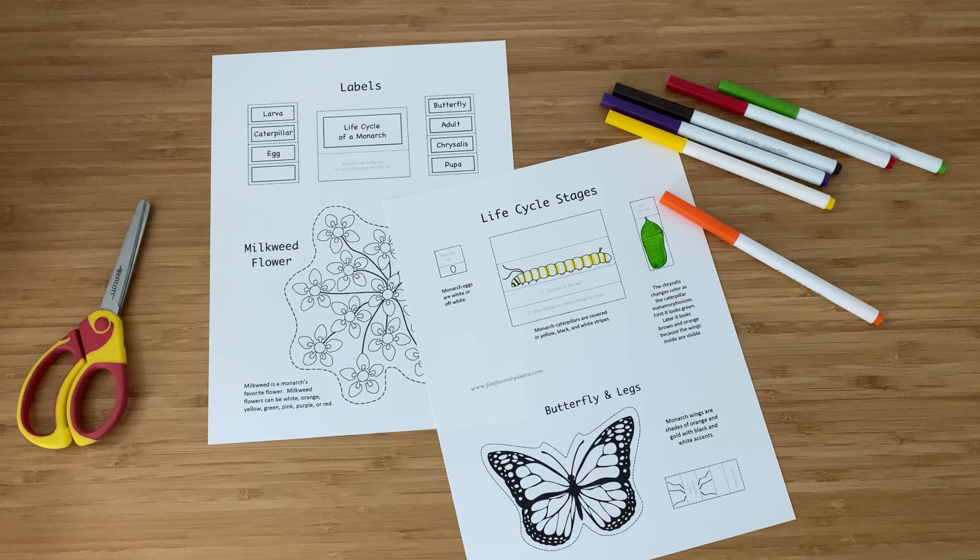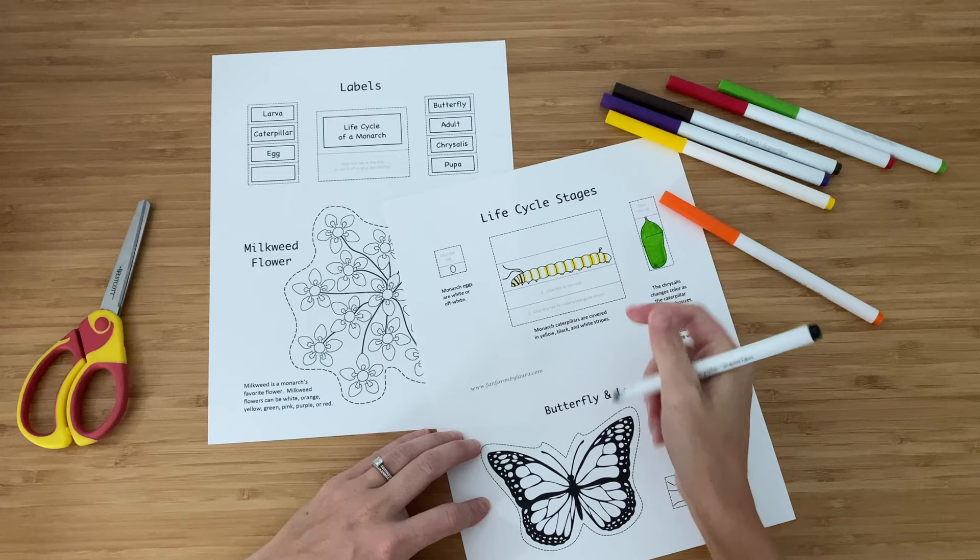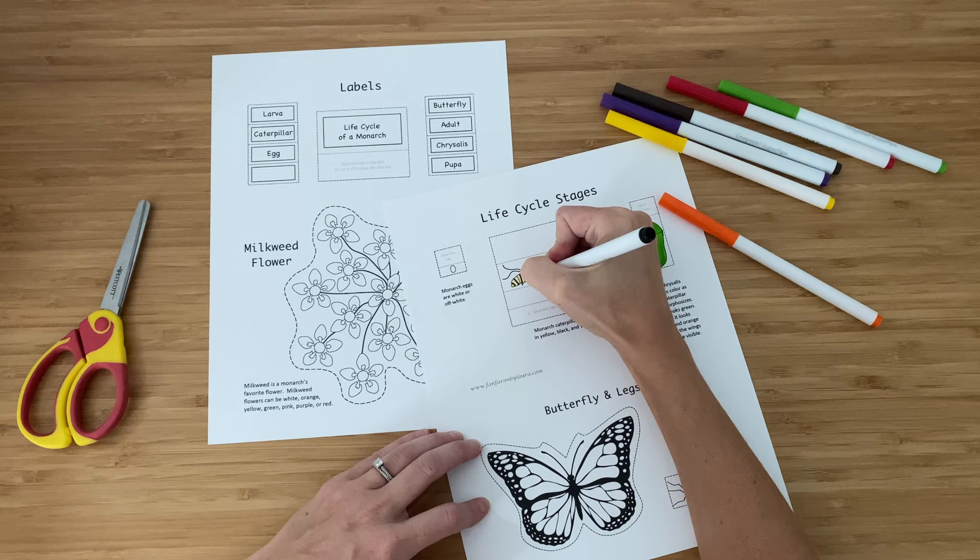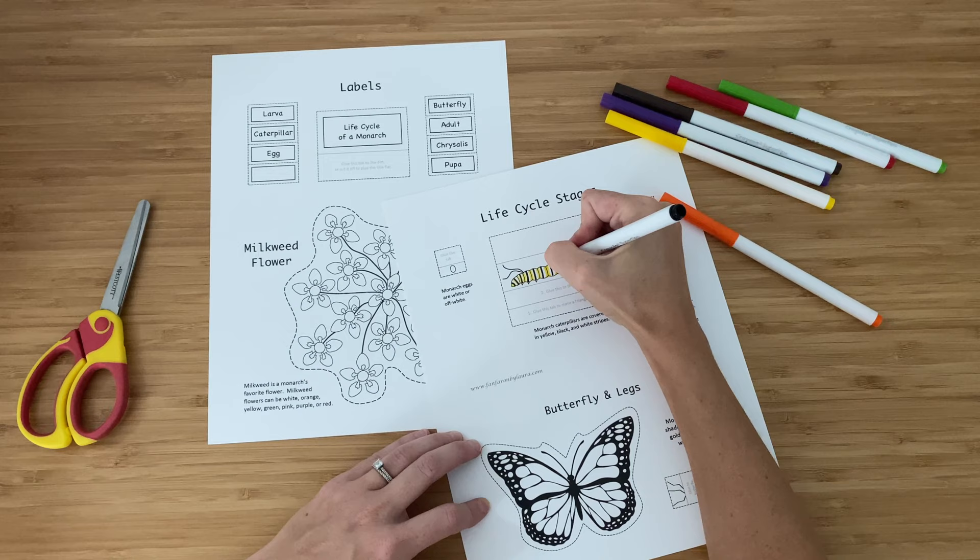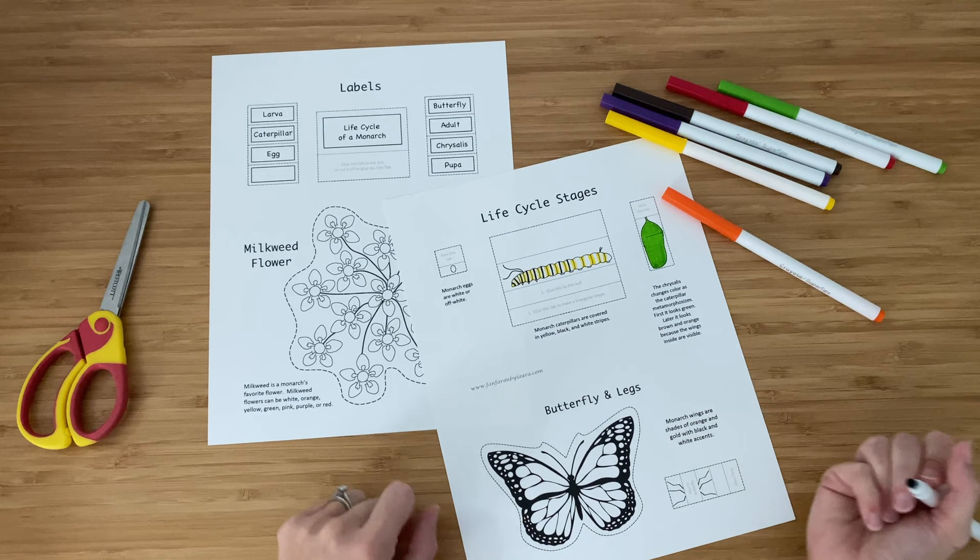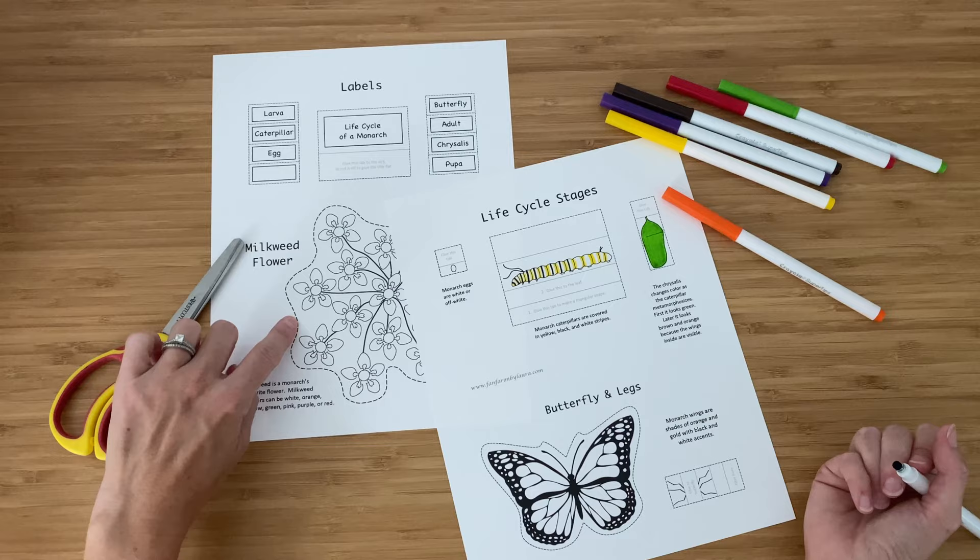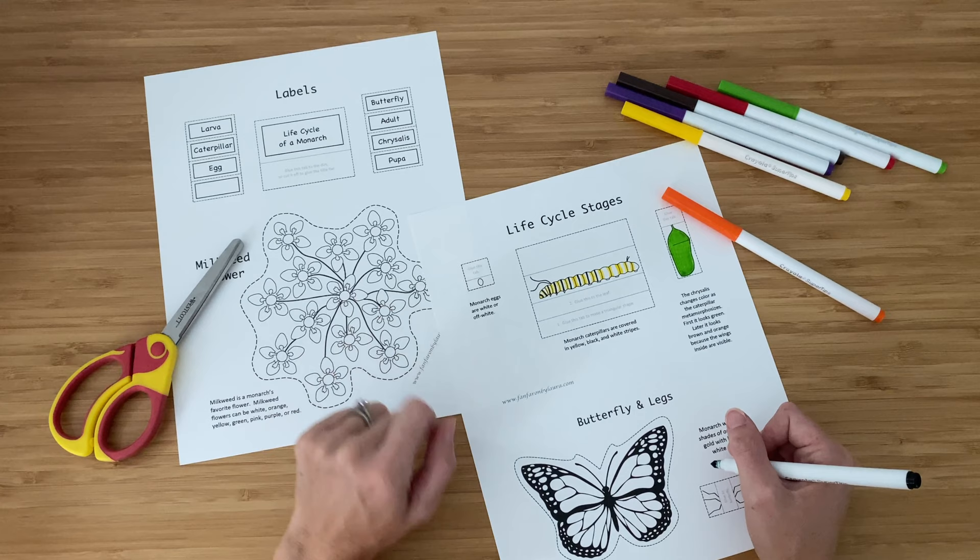I'm coloring the life cycle stages using some of the notes that are on here, giving me ideas of what color things might be. So right now I'm doing the caterpillar. And as I looked at pictures, I noticed they have a black stripe with the white stripes on each side and then yellow on the edges of each segment of their body. So I'm adding black stripes. And then I'm going to color my monarch with some orange. And when I'm done, I'm going to cut them all out on those black dashed lines. And this is a milkweed. It's a monarch's favorite flower. So that's what kind of plant we're making.